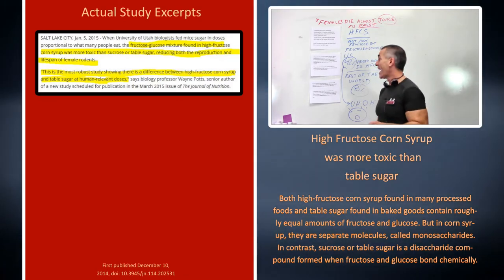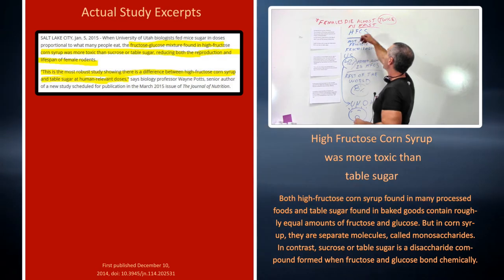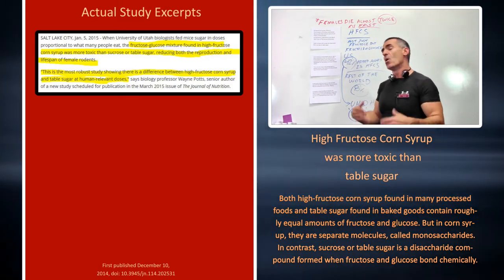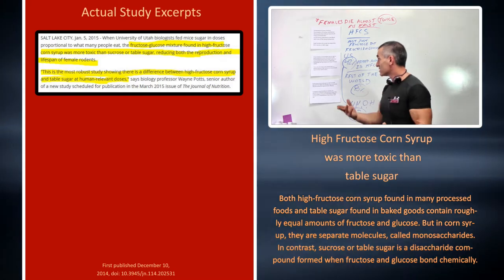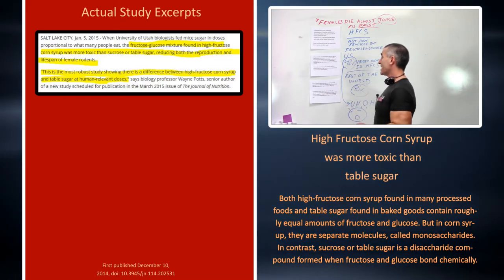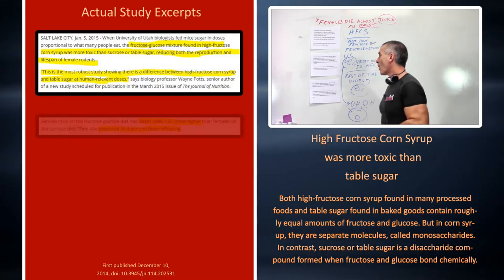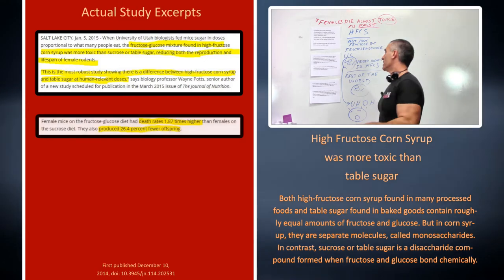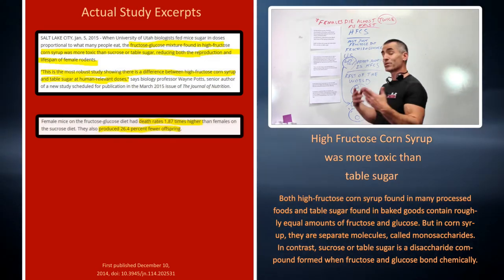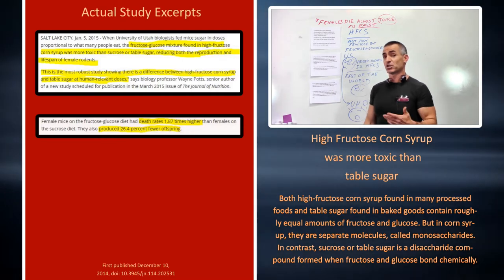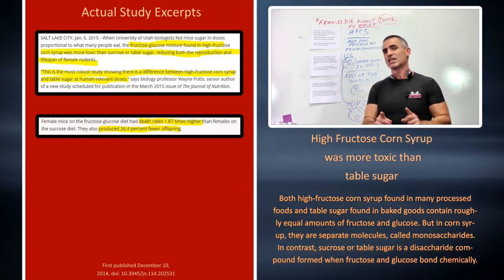It wasn't quite dying twice as fast - that may have been an exaggeration. Female mice on the fructose-glucose diet had death rates 1.87 times higher, almost twice, than females on the sucrose or table sugar diet, and produced 26.4% less offspring.